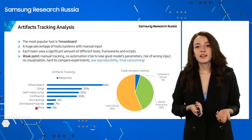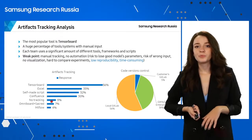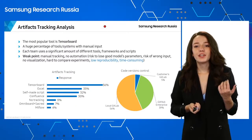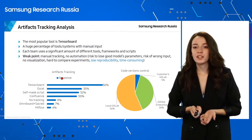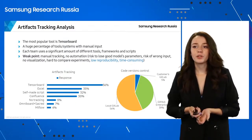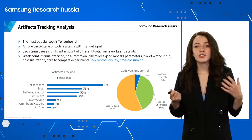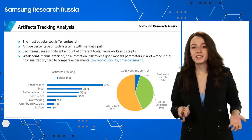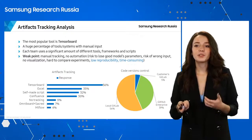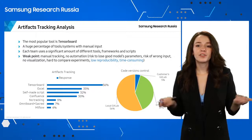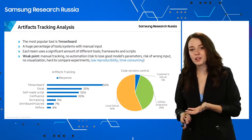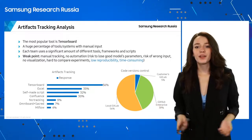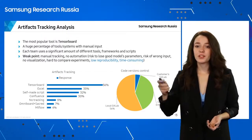Why should we track it automatically? If you're tracking manually, it takes a lot of time, there's a risk of wrong input, there's no visualization, and it's hard to compare experiments — it's really inconvenient. You should automate it because if it's not automated, it's really time-consuming. And if it's time-consuming, you need to pay more, and your customer sometimes doesn't want to pay more — because first of all, it's business.